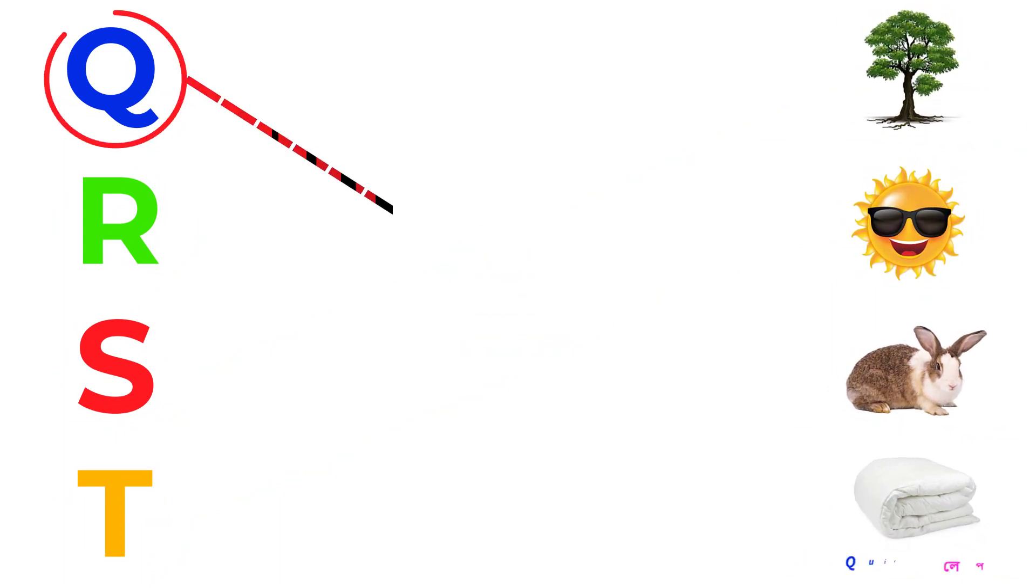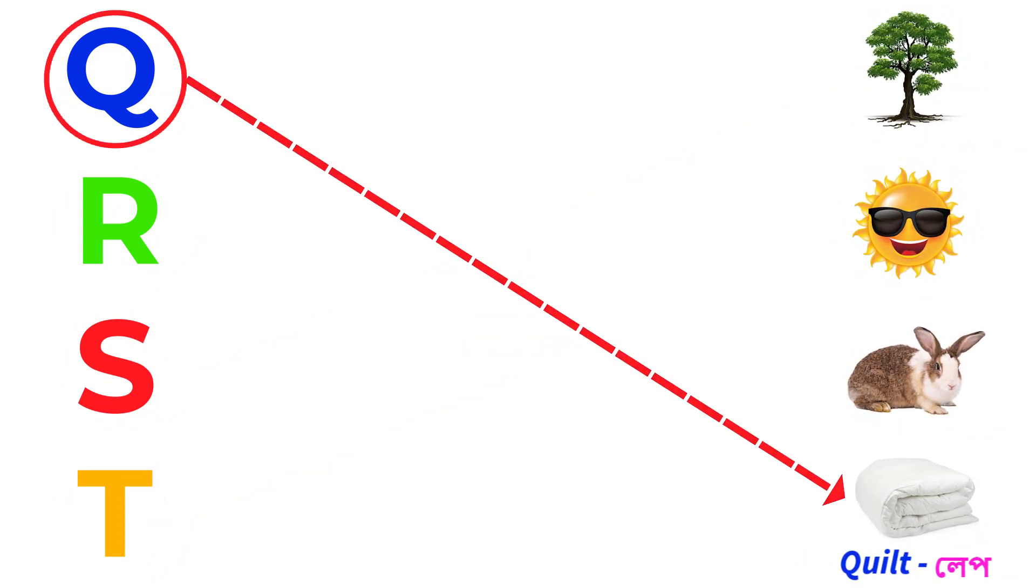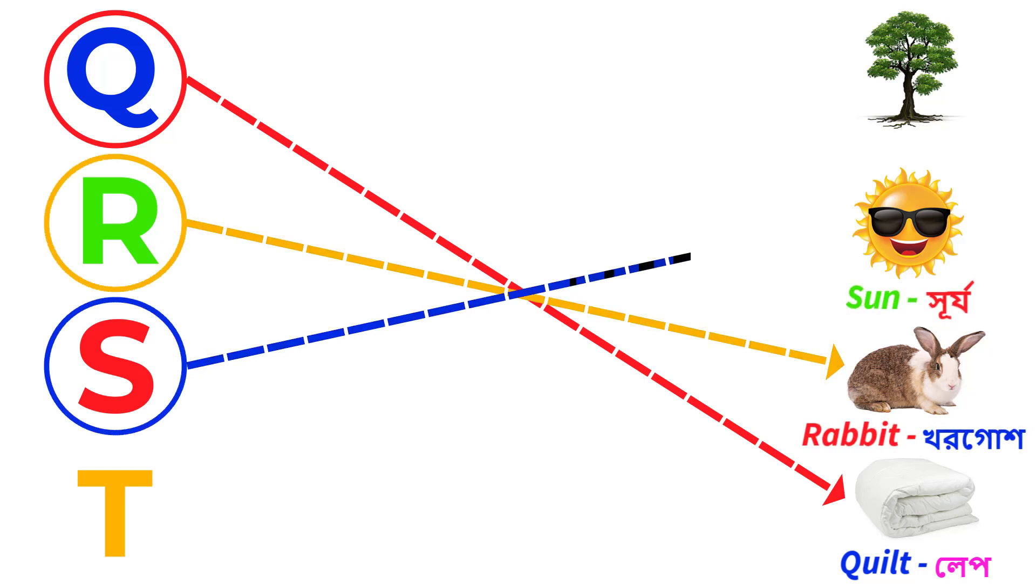Q for quilt, R for rabbit, S for sun, T for tree.